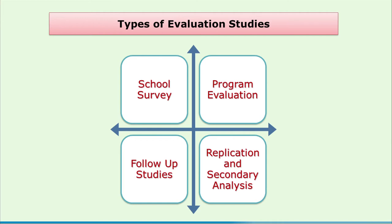There are four main types of evaluation studies or evaluation researches: school surveys, program evaluation, follow-up studies, and replication and secondary data analysis. As they are all types of evaluation studies, the commonality amongst all four of them is the purpose — evaluation — that is, to see to what extent the goals have been achieved. We shall now see in detail how they are different at the micro level.